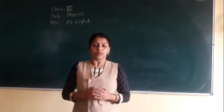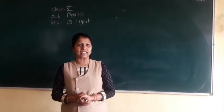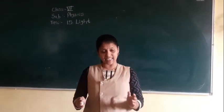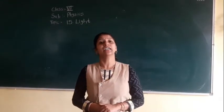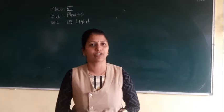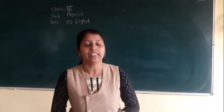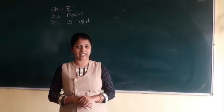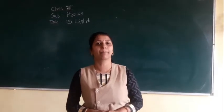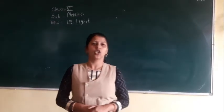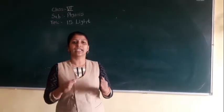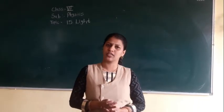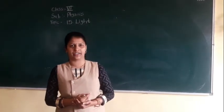So which type of source of light is the sun? The sun is a natural source of light. Now, what about a candle? A candle is an artificial or man-made source of light. So there are mainly two sources of light: natural and man-made.